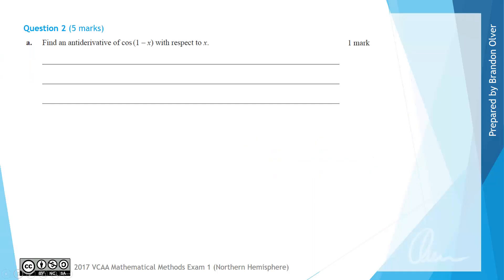For part A of this question we're asked to find an antiderivative of cos of 1 subtract x with respect to x. From the formula sheet we know that the integral of cos of ax dx is equal to 1 divided by a times sine of ax plus c.